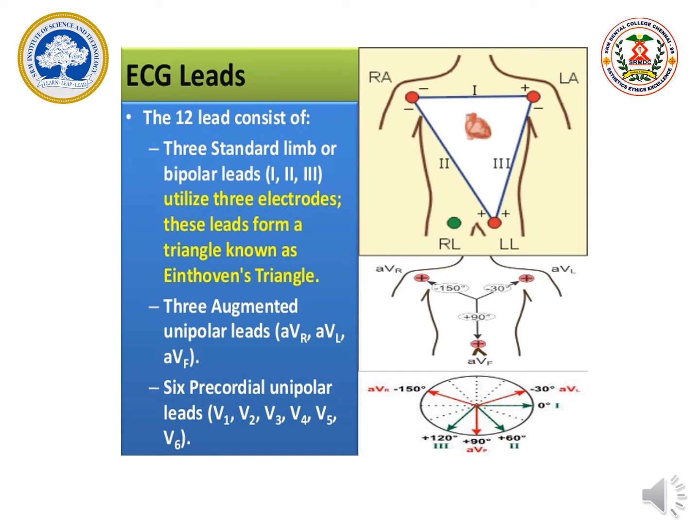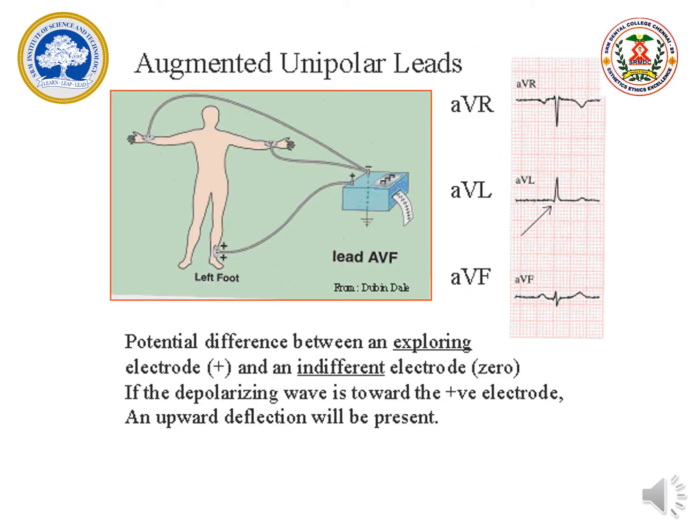Next are the three augmented unipolar leads: AVR, AVL, and AVF. AVR is fixed on the right arm, AVL on the left arm, and AVF at the center position. Next are six precordial unipolar leads placed above the chest region, above the sternal angle: V1, V2, V3, V4, V5, and V6. If the depolarization wave is toward the positive electrode, an upward deflection will be present.